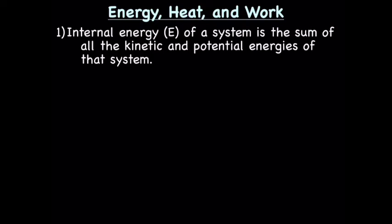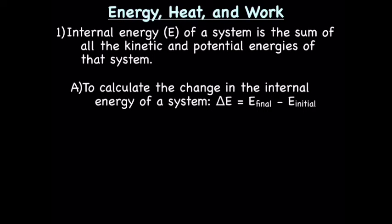On to the last topic: energy, heat, and work. We'll start with internal energy, which is represented by capital E. Internal energy of a system is the sum of all of the energies of that system. We can calculate the change in the internal energy of a system using the equation delta E equals energy final minus energy initial. We can have a change in energy without creating or destroying energy, because we're talking about the internal energy of the system. The energy in the system can change, and the energy of the surround can change, but the total energy is going to stay the same.